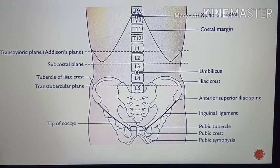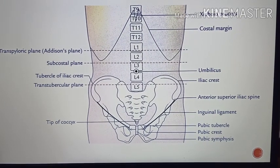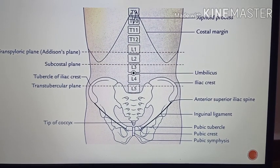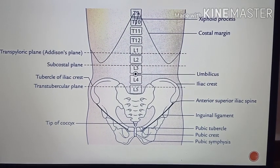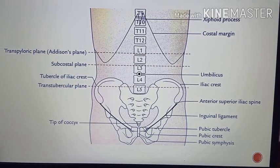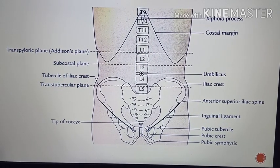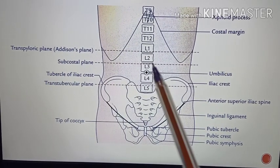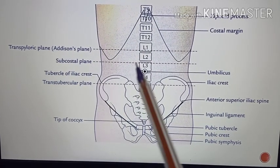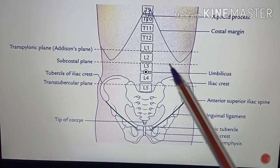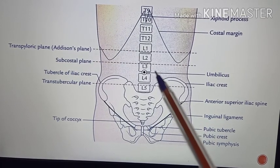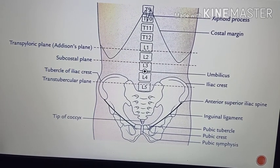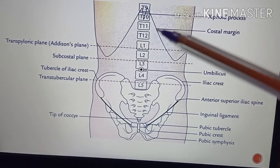Apart from the four imaginary planes — two horizontal and two vertical — which divide the abdomen into nine regions, we are also supposed to know a few other planes. One is the subcostal plane. It is also an imaginary horizontal plane which passes immediately below the costal margin.